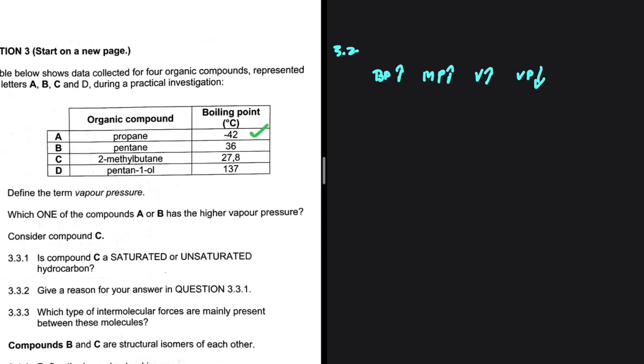It is compound A with minus 42 degrees Celsius. Compound B has a boiling point of 36 degrees Celsius. So the answer here is A. A has the lowest boiling point, so it should have the highest vapor pressure.